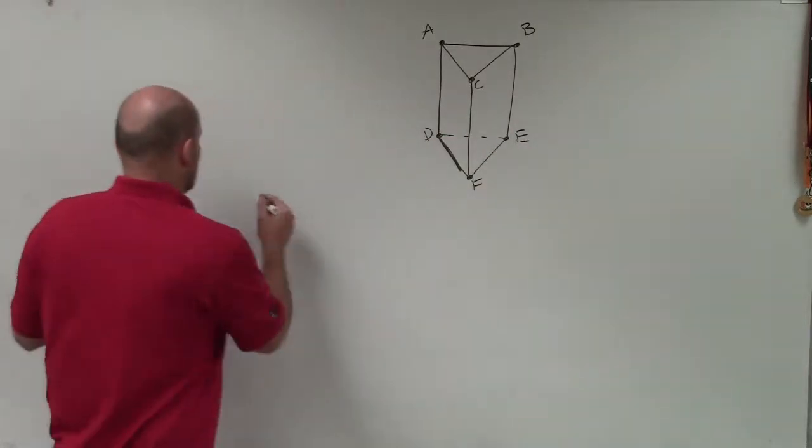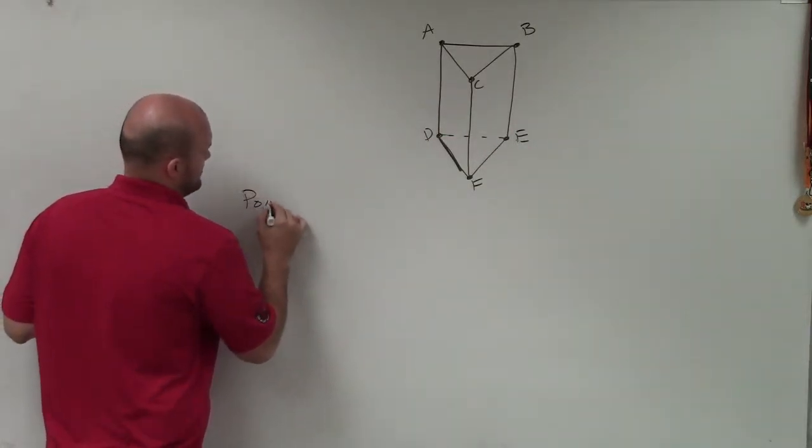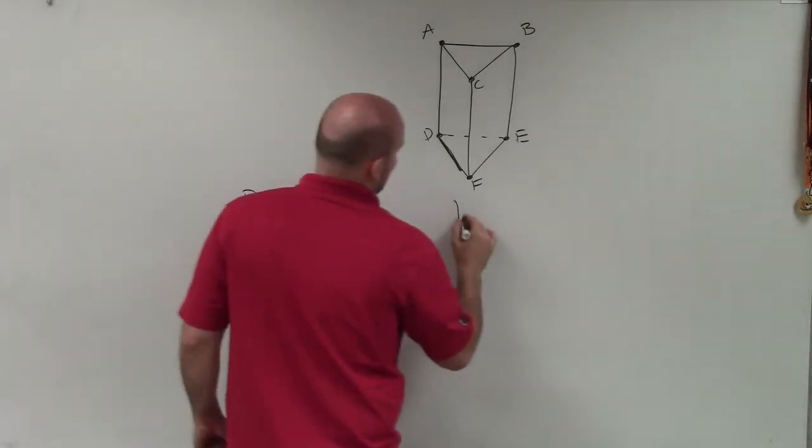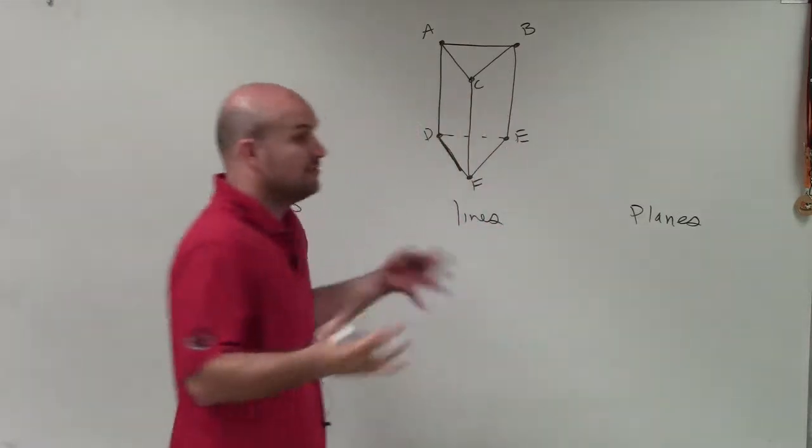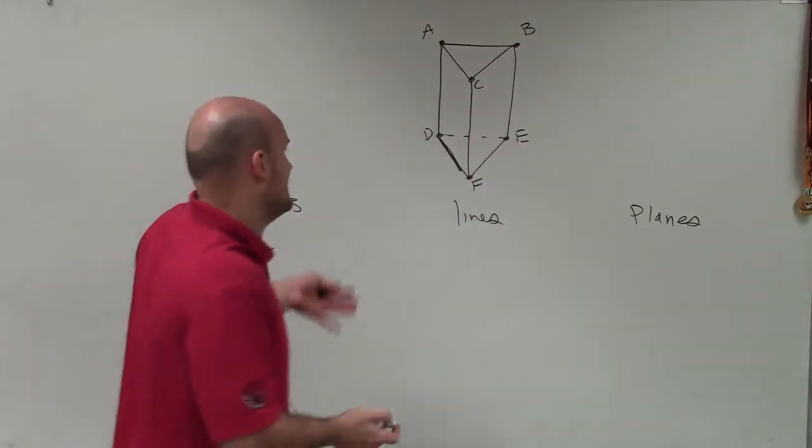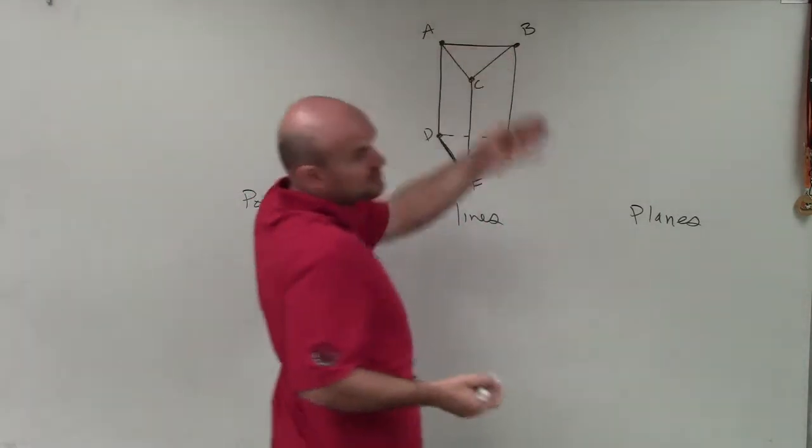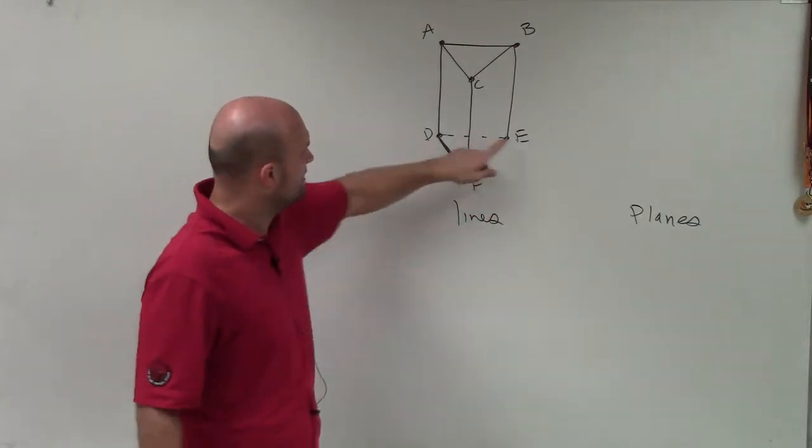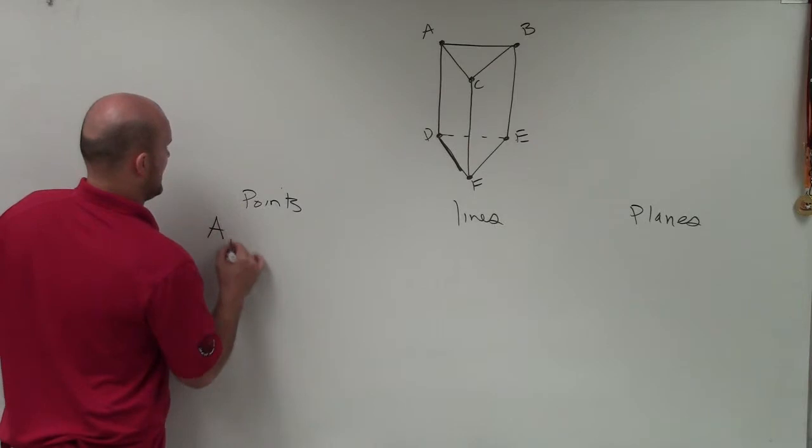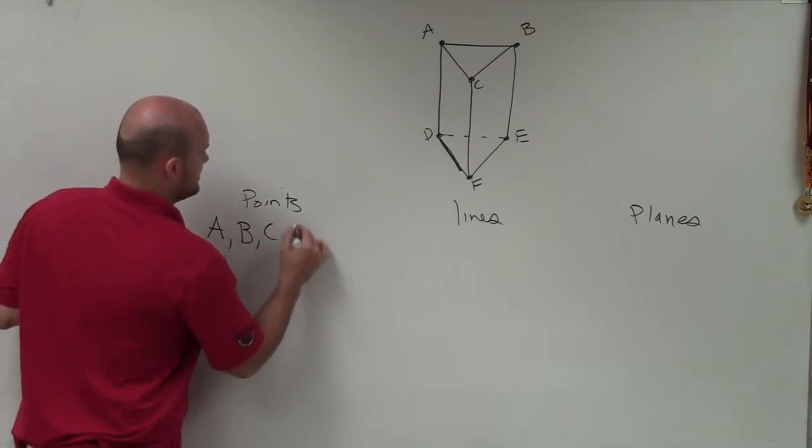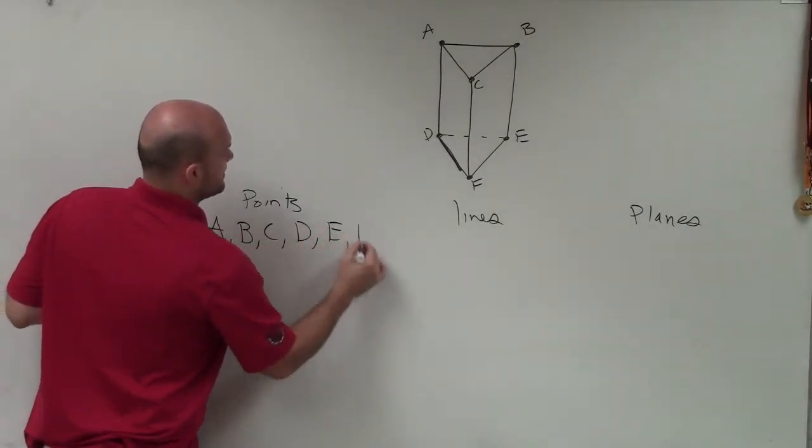And what I want to do is label all the points, lines, and planes that are present in this figure. Now, the points is pretty obvious. You can just see that all these capital letters, those are going to be all of our points. And you can see a point is where these lines come together. So my points are going to be A, B, C, D, E, and F.